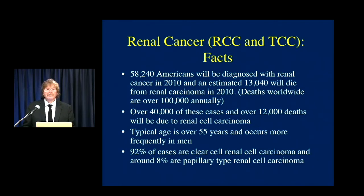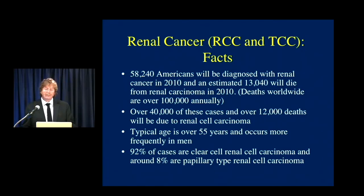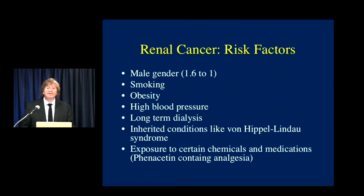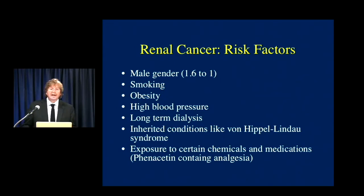Typically patients are over age 55, and it occurs more commonly in men. 92% of cases are clear cell renal cell carcinoma, and about 8% are papillary renal cell carcinomas. Risk factors include smoking, obesity, and high blood pressure, as well as long-term dialysis. Patients with Von Hippel-Lindau syndrome get renal cell carcinomas at an increased rate, often multiple tumors in their 20s. Certain exposures, like phenacetine-containing analgesics, are also discussed.